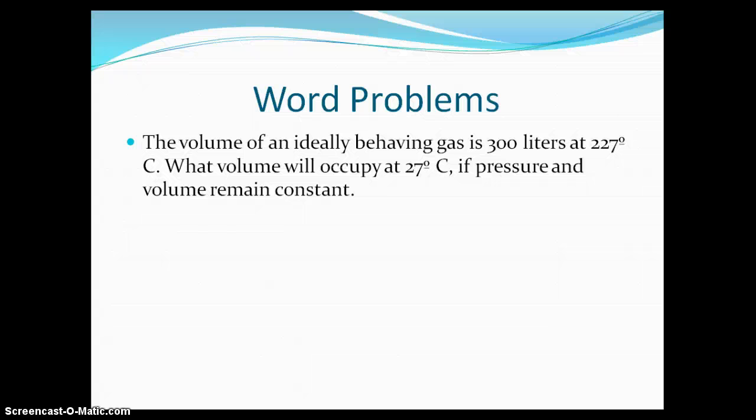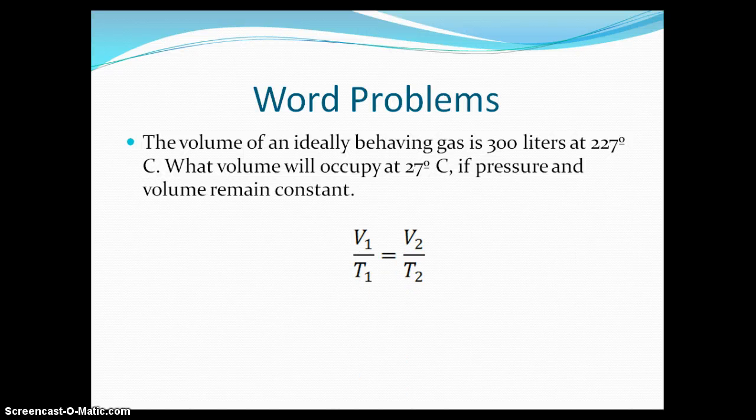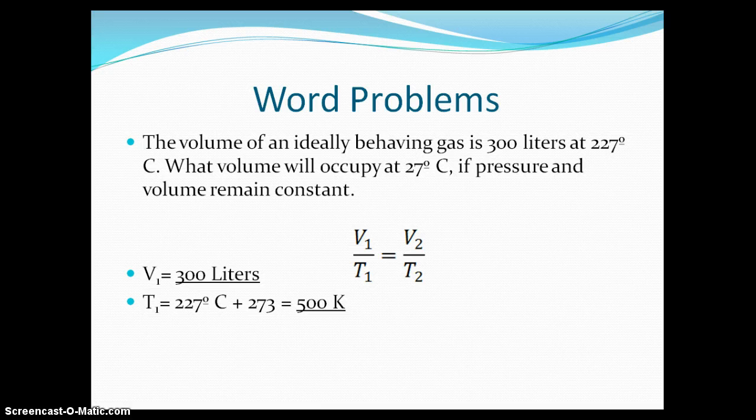As stated before, this deals with Charles' Law, which means we are going to be using the equation V1 over T1 equals V2 over T2. Now let's solve for our knowns and unknowns. We know that V1 equals 300 liters. T1 is given at 227 degrees Celsius. Now when we do Charles' Law problems, we don't use Celsius, we use Kelvin. So now we have to convert Celsius to Kelvin. 227 degrees Celsius plus 273 equals 500 degrees Kelvin.